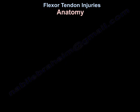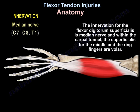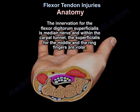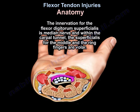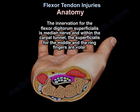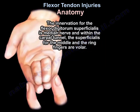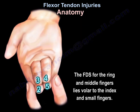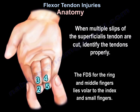The flexor digitorum superficialis is absent in the small finger about 25% of the time. Its innervation is the median nerve. In the carpal tunnel, the superficialis for the middle and ring fingers are volar, as shown in the diagram. When multiple slips of the superficialis tendon are cut, identify the tendons properly.